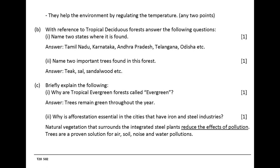Briefly explain the following. Why are tropical evergreen forests called evergreen? Answer: trees remain green throughout the year. Why is afforestation essential in the cities that have iron and steel industries? Natural vegetation that surrounds integrated steel plants reduces the effects of pollution. Trees are a proven solution for air, soil, noise, and water pollution.